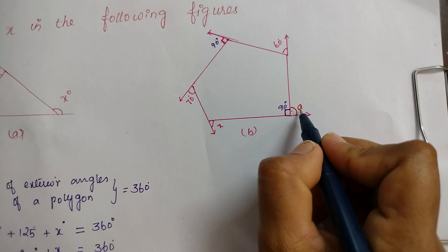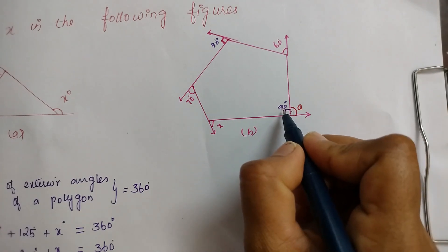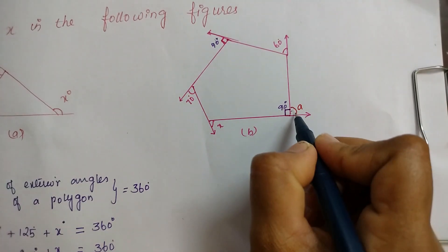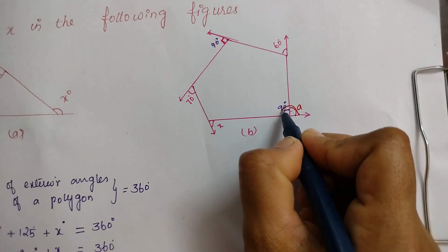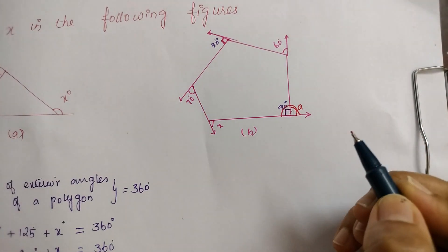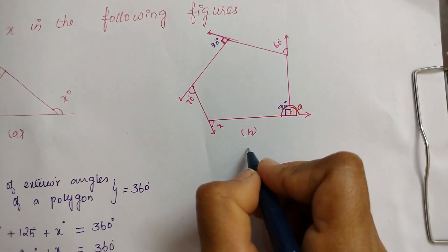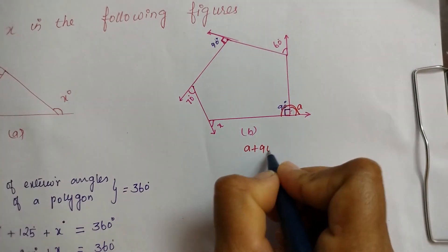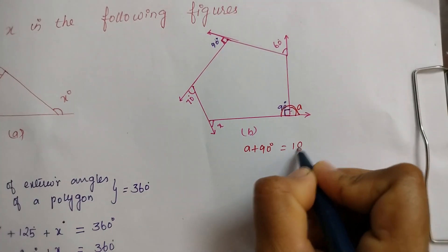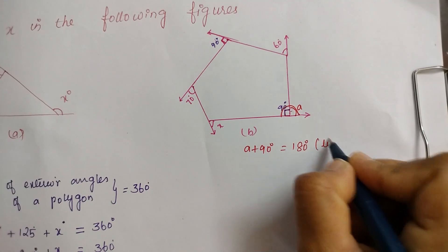Angle a and 90 degrees form a linear pair. We know a linear pair equals 180 degrees, which means angle a plus 90 equals 180. So angle a equals 90 degrees.